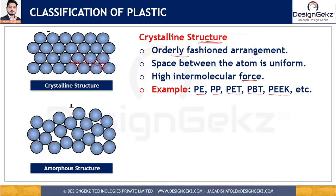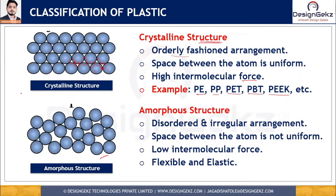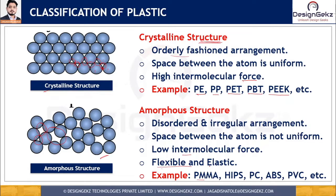Amorphous material means shapeless or without form. In amorphous structures, the space between atoms is not uniform — it varies from place to place — indicating low intramolecular force. With less temperature, we can break that intramolecular force, making amorphous structure polymers flexible and elastic. Examples of amorphous structure plastics include PMMA (polymethyl methacrylate), HIPS (high impact polystyrene), polycarbonate, ABS (acrylonitrile butadiene styrene), and PVC (polyvinyl chloride).